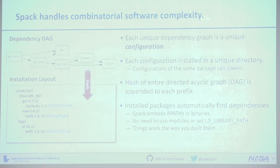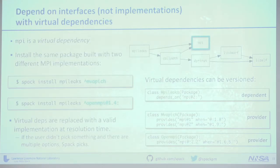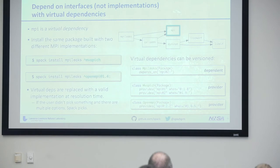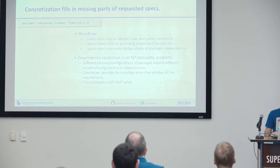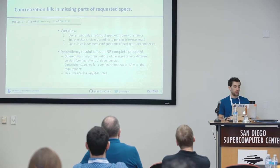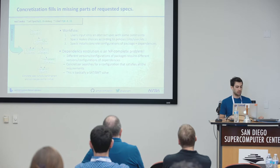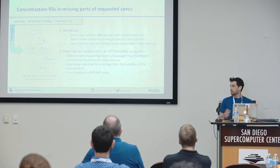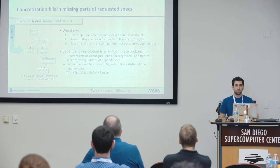We also have virtual dependencies for things like MPI — you depend on MPI, you don't care whether it's Open MPI, MPICH, or whatever, and at concretization time we fill those in. Concretization takes an abstract spec and user-configured default policies and resolves that into a full set of provenance. This is basically a SAT solve — we don't currently use a SAT solver to do it but that's on our roadmap. It's a way of taking a simple language for what we want and installing it on the system.